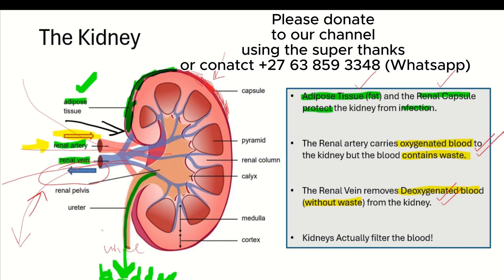Once you understand this, the urinary system as a whole becomes easy — even if they use complex terminology. The basic idea is that blood enters the kidney with waste and leaves without waste, meaning the kidney has filtered it and that waste becomes urine. I hope this has helped you understand the urinary system better. There will be an exercise in the next video — thank you for watching, and don't forget to subscribe.